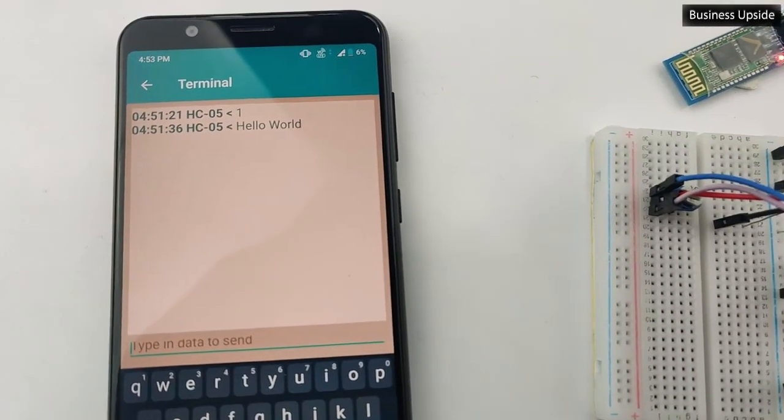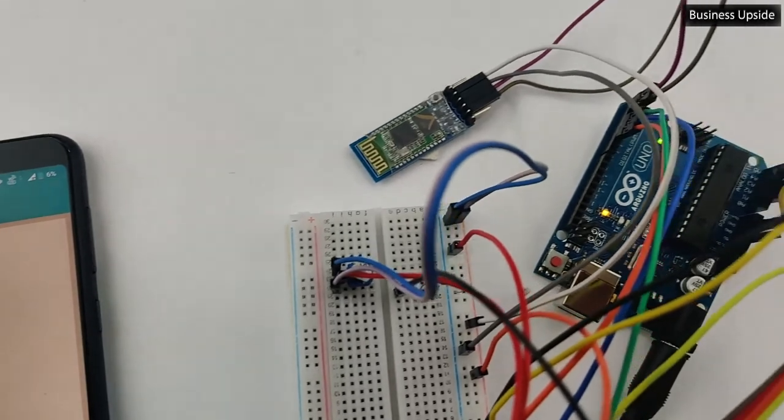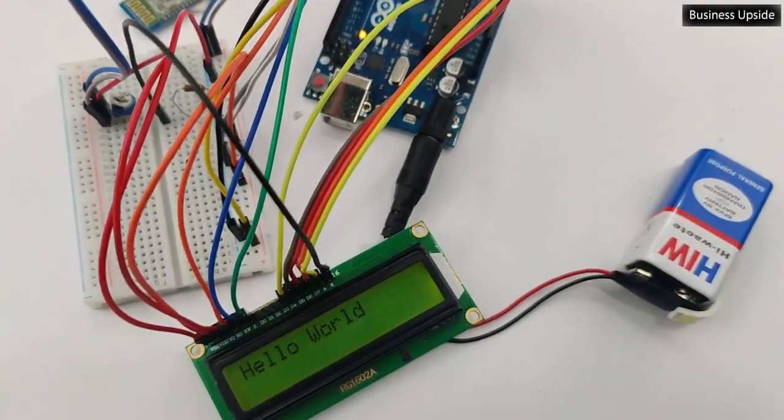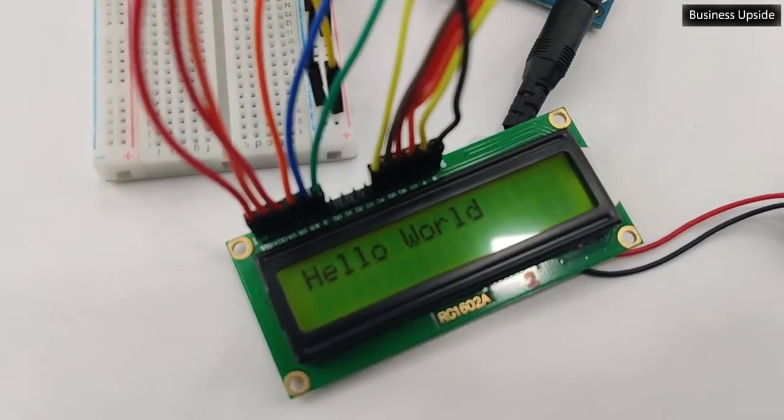Hopefully, you enjoyed building your very own wireless notice board. You can put it in an enclosure and wall mount it. The battery will ensure that you don't need a USB cable to power up your system.